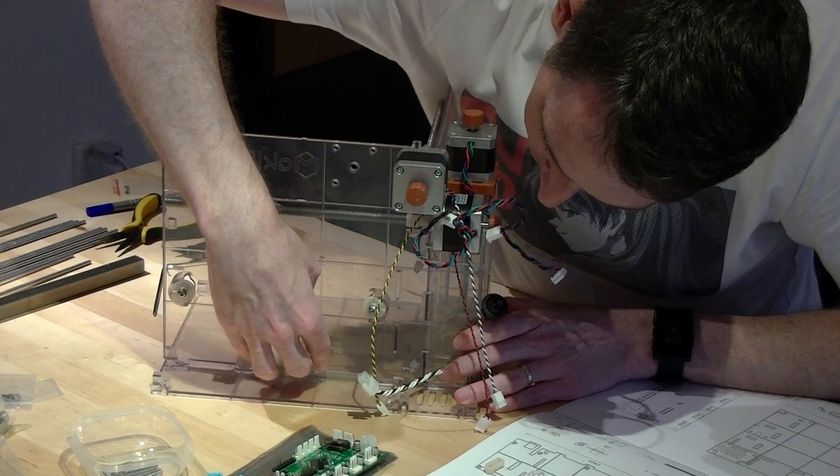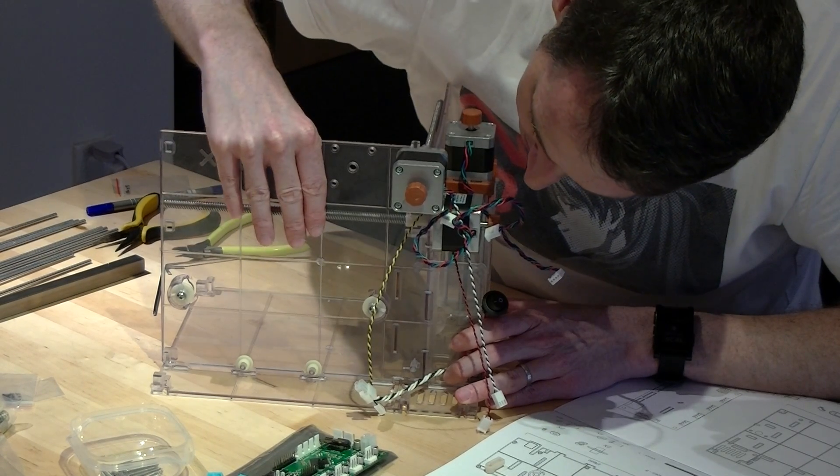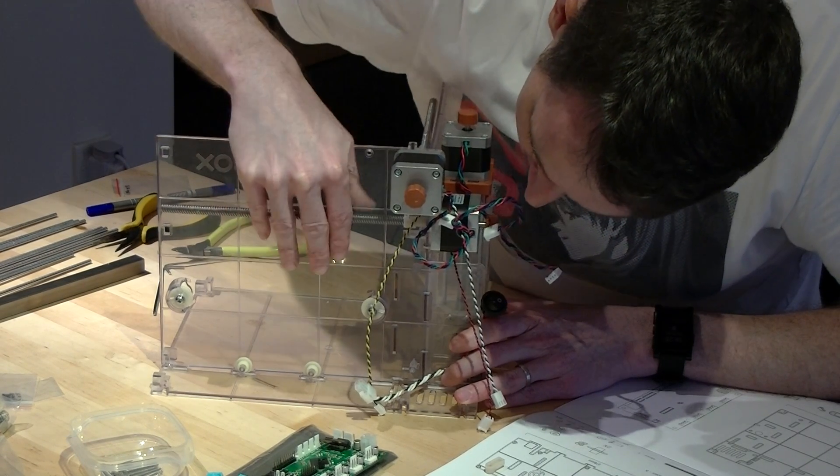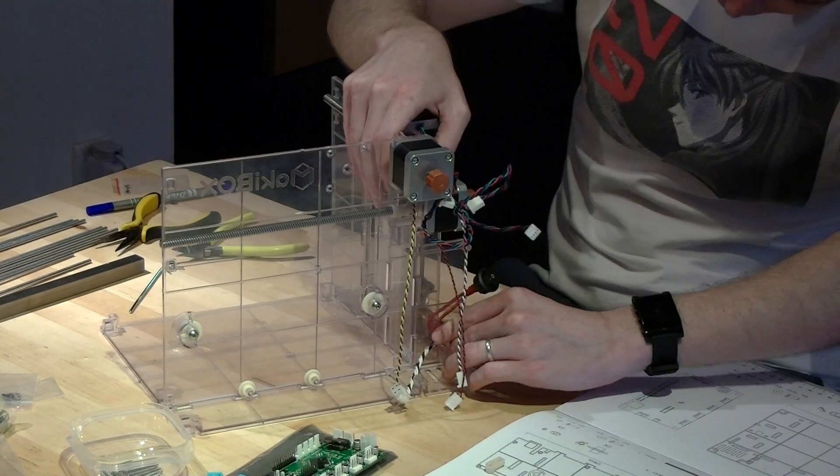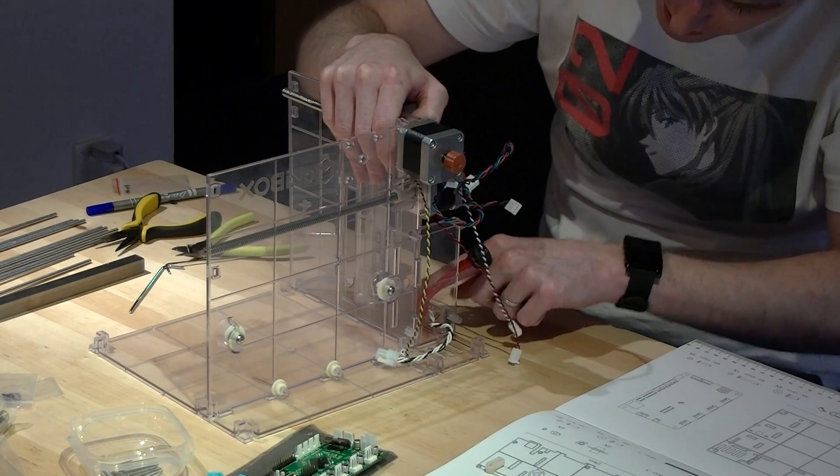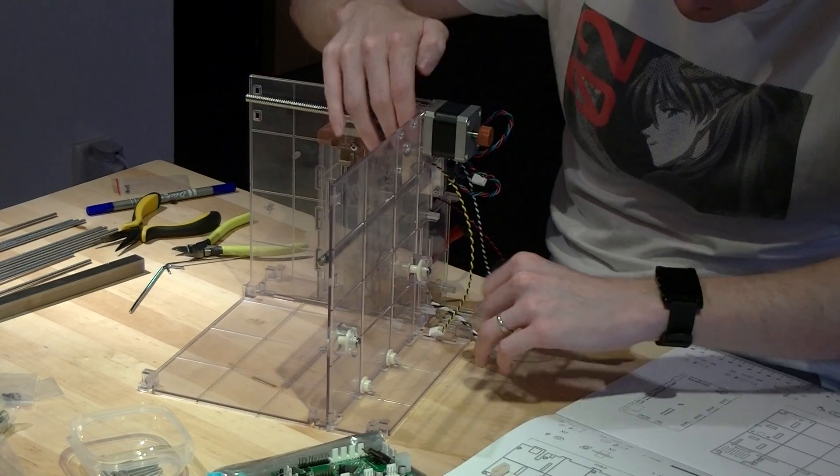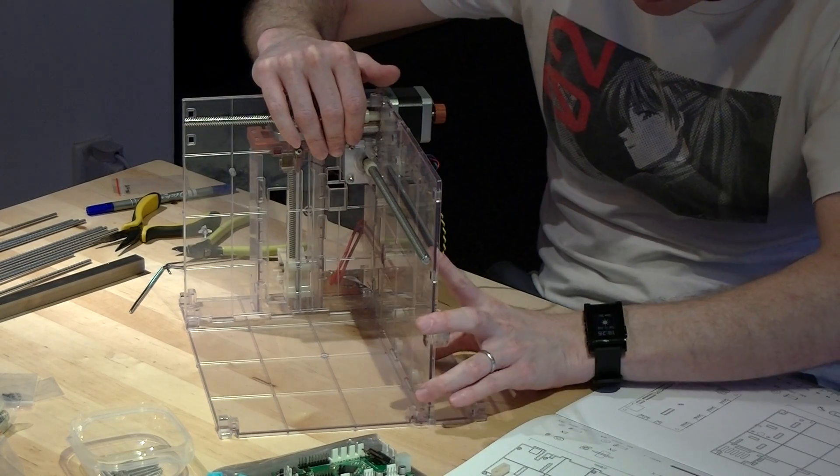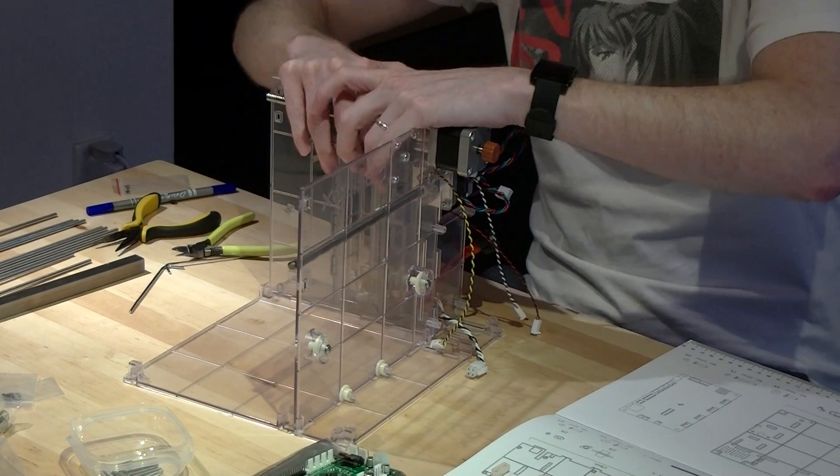You're going to want to make sure that these rollers fit into the slots that are right below them. And just push everything down vertically. Watch out for any wires that got smushed in between different panels or anything.